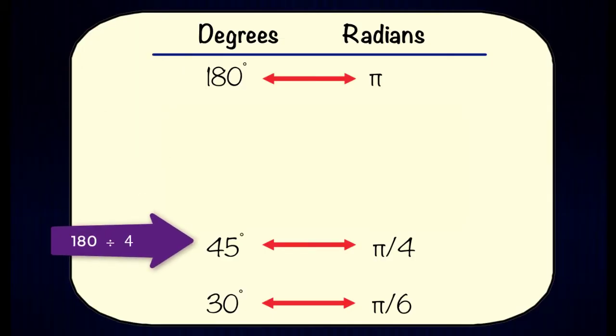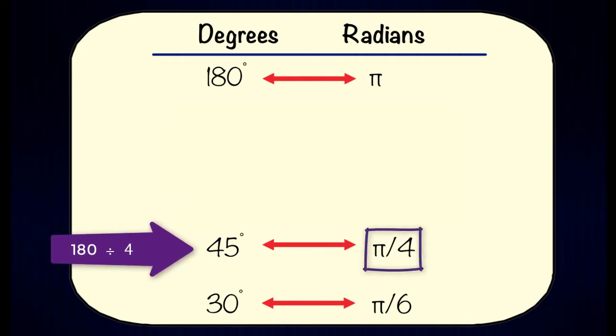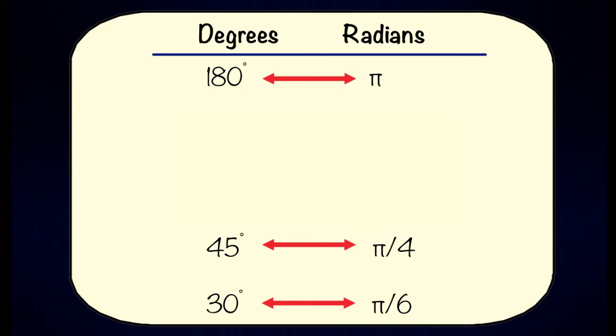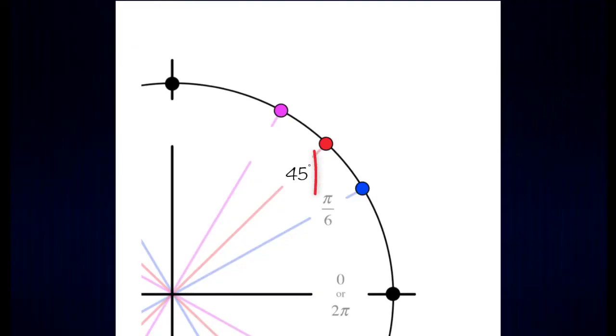Going back to our chart, if we take 180 degrees divided by three we're going to get pi over four. So in other words 45 degrees is equivalent to pi over four radians. Back to our unit circle we can replace 45 degrees with pi over four.